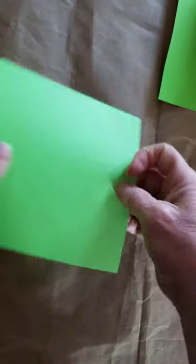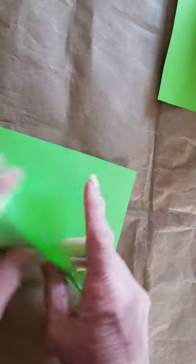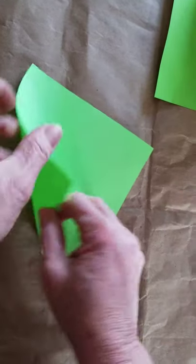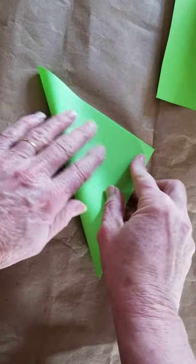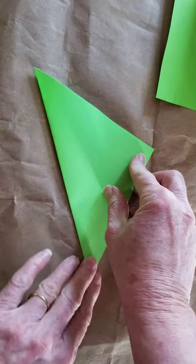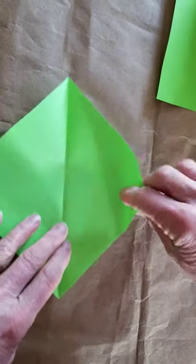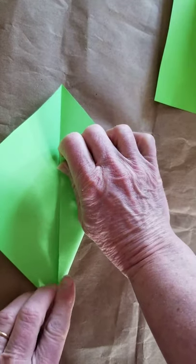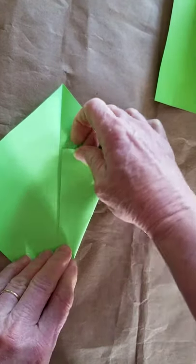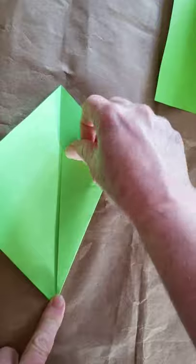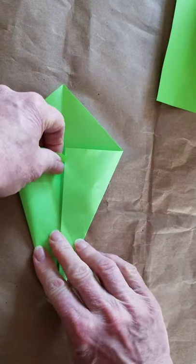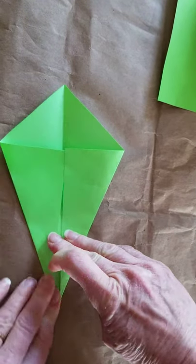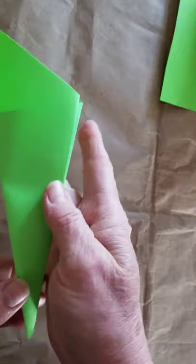Let's very quickly make another one. So we've got, again we take our square, we fold it in half, along the line, we fold the edges into the center, this one, and this one, we fold it in half.